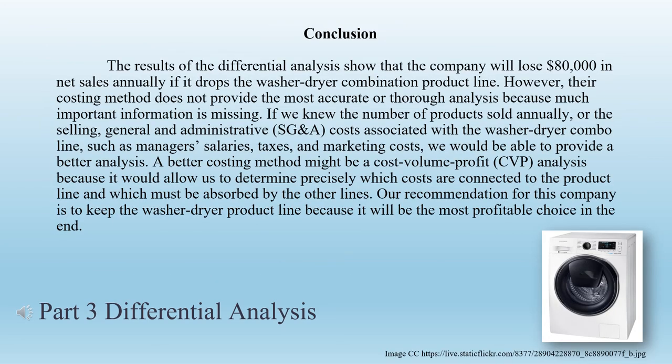Conclusion: The differential analysis shows the company will lose $80,000 in net income annually if it drops the washer-dryer combination product line. However, the costing method does not provide the most accurate analysis because important information is still missing — such as number of products sold annually or selling, general, and administrative costs like manager salaries, taxes, and marketing costs. A better approach might be a cost-volume-profit analysis to determine precisely which costs are connected to the product line. Our recommendation is to keep the washer-dryer product line because it will be the most profitable choice.